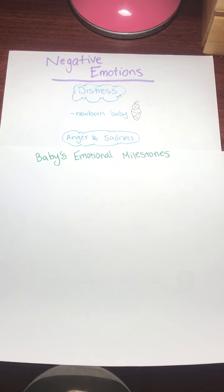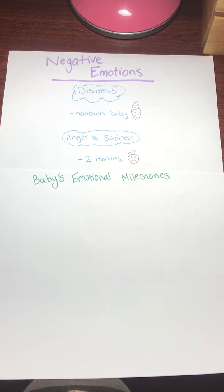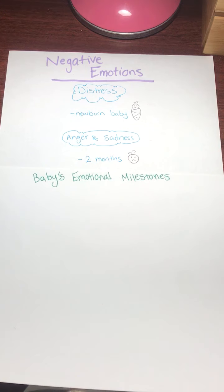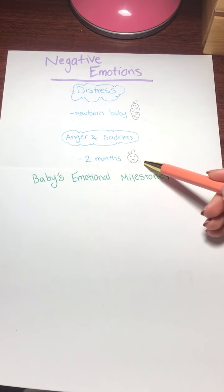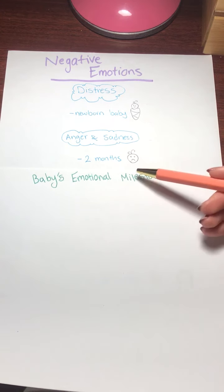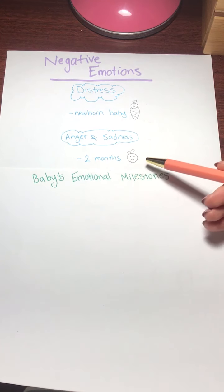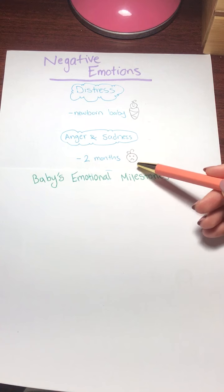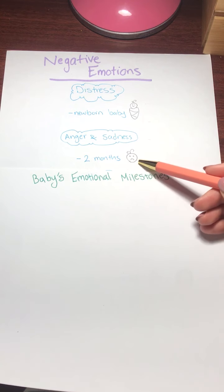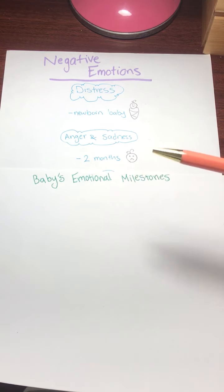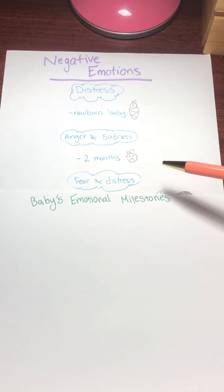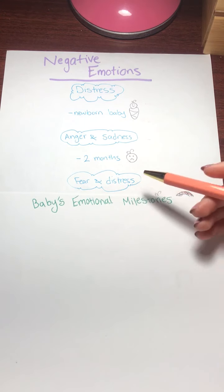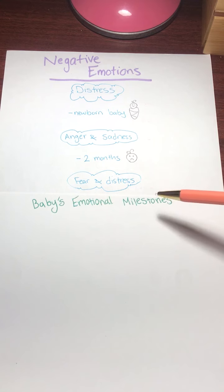Anger and sadness. So by about two months your baby should visibly or they should have visible facial expressions that match the situation. So maybe you take something away from them and they start crying or they start getting sad or angry. So that's about two months just those visible facial expressions. And we'll talk about fear and distress.